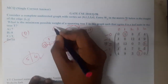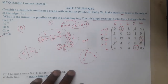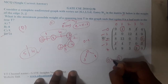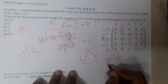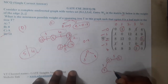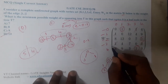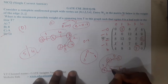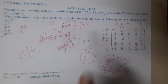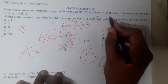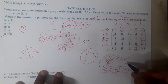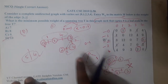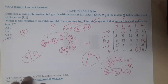Some students may get the answer 7 or 8. That happens by simply taking the minimum values without respecting the leaf constraint. For example, taking edges 0–1 (cost 1), 0–3 (cost 1), 3–4 (cost 2), and 4–2 (cost 3) gives a total of 7. However, in that tree vertex 0 has degree 2, so it is not a leaf — violating the condition. This is the most common mistake. Starting the tree construction from vertex 0 as a leaf avoids this error.